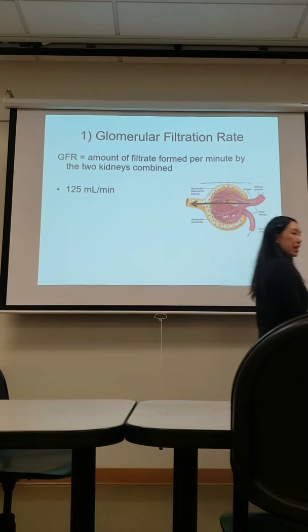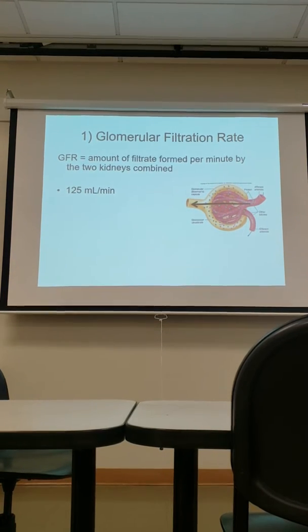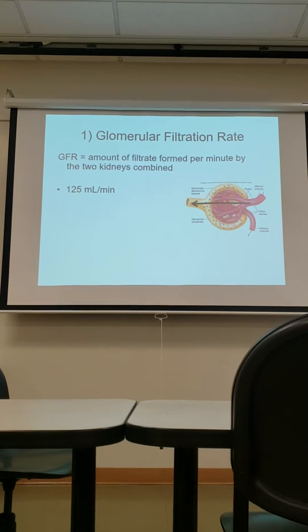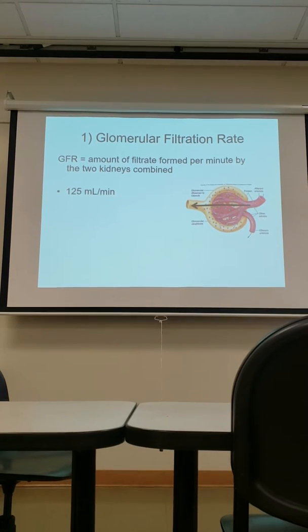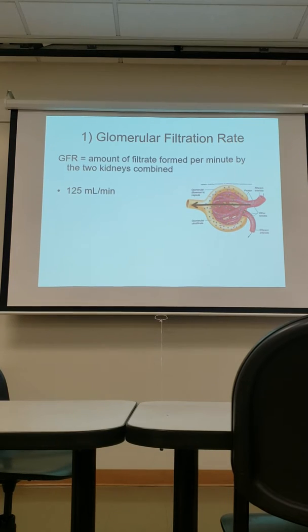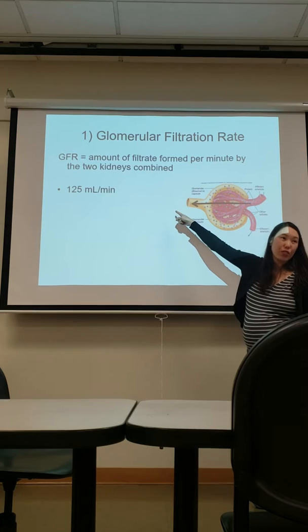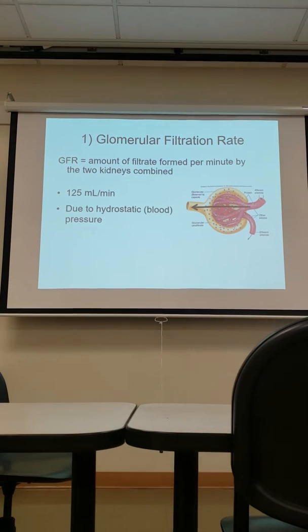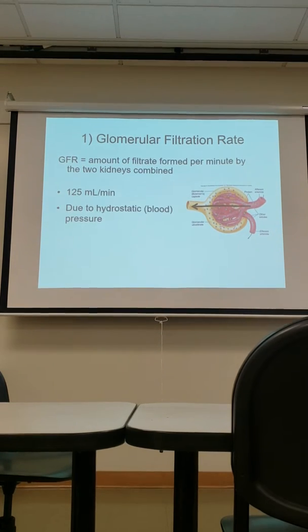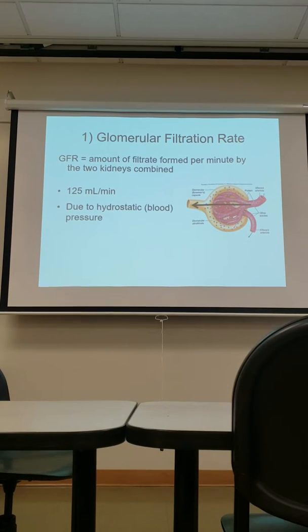That's a good rate. Think about it — your kidneys are working pretty hard. Every minute, one of your kidneys has to filter through and create about this much filtrate, so they're working very hard every single minute. But this is good; this is a good functioning kidney. Every minute, 125 milliliters of filtrate comes through.